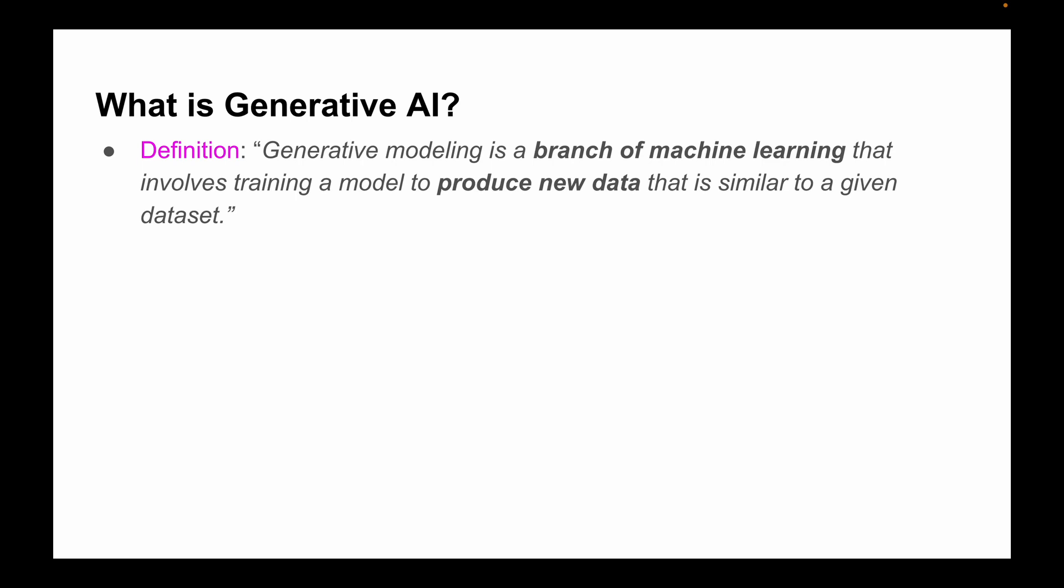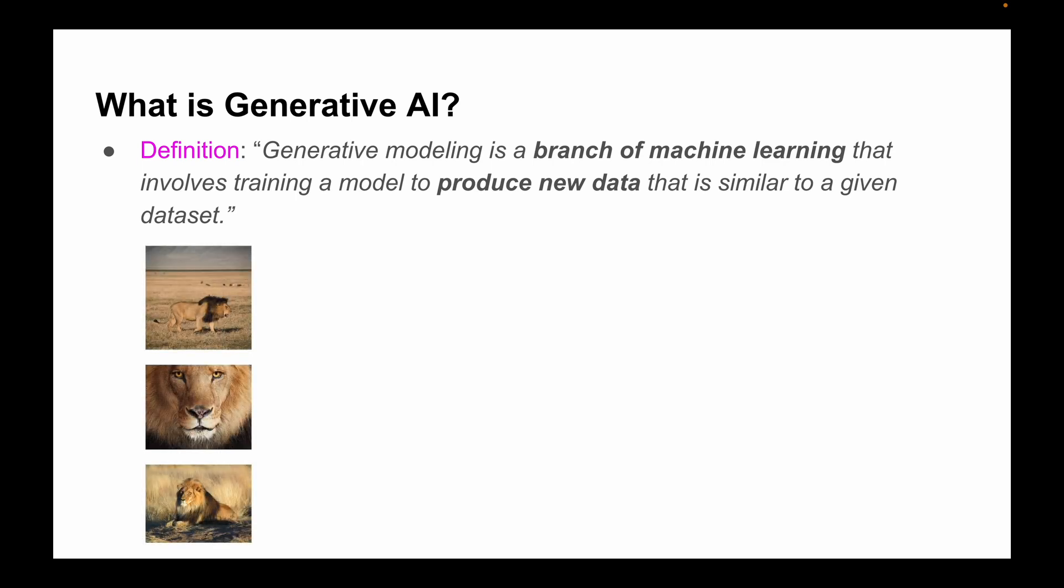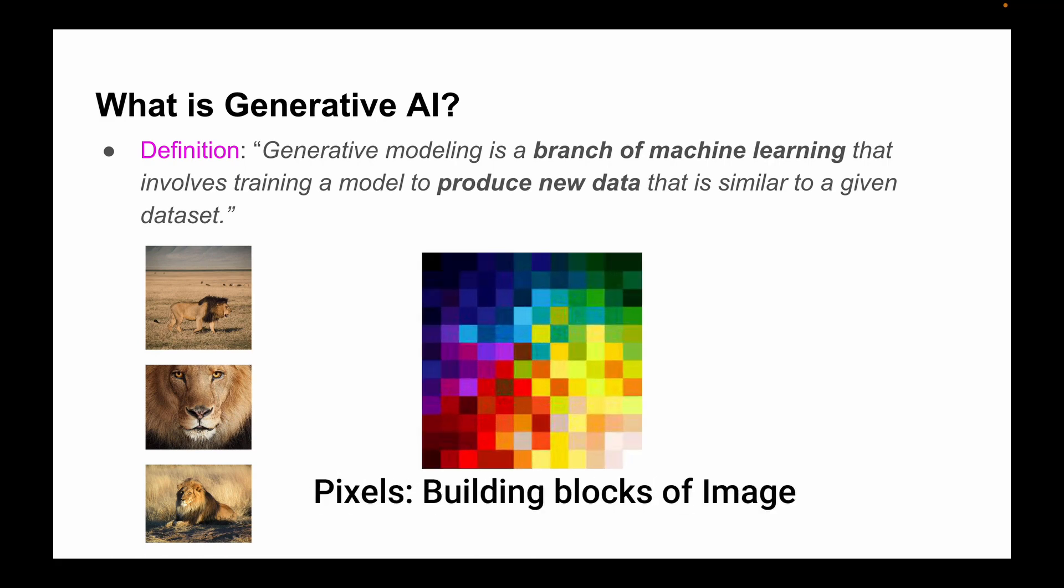Now let me simplify this with the help of an example. Imagine that you have a big collection of lion pictures. These individual pictures are made up of pixels. These pixels are like building blocks of an image.